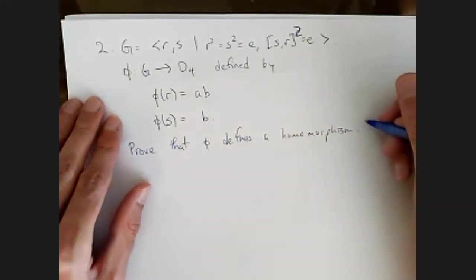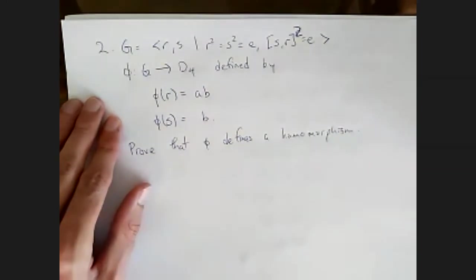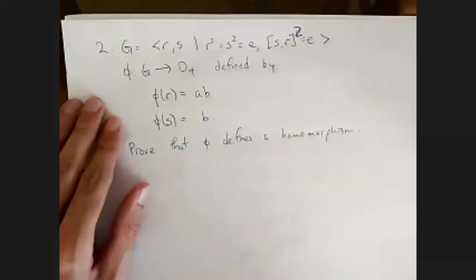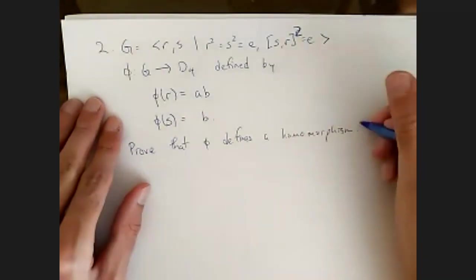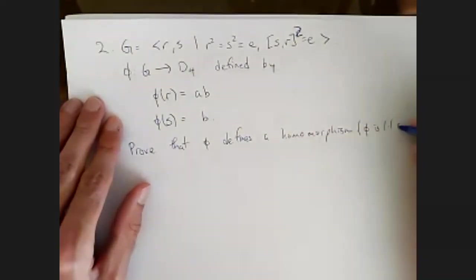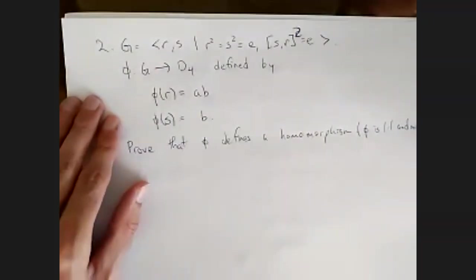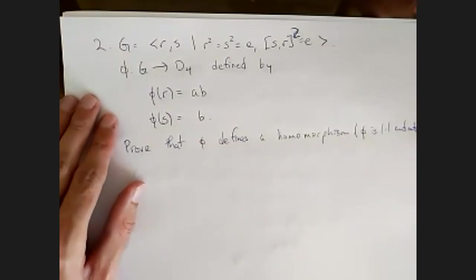And then something that I had on the exam but that I later told you not to do — but we can do that in the solution. We'll also prove that phi is one-to-one and onto. I didn't ask you to do that, but we're going to do it now.